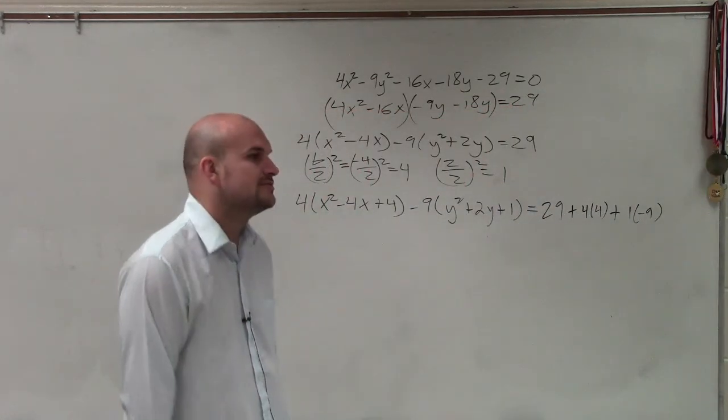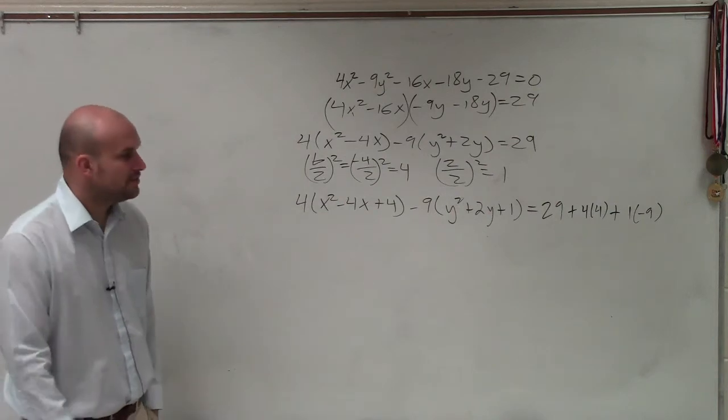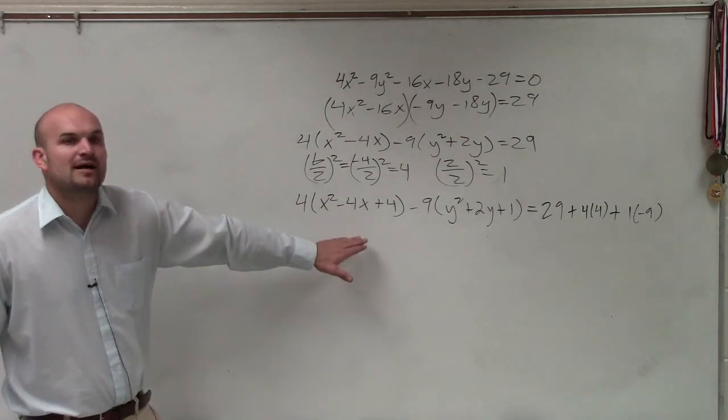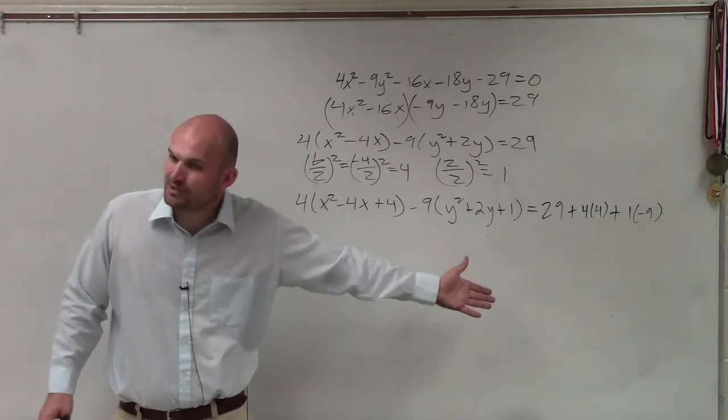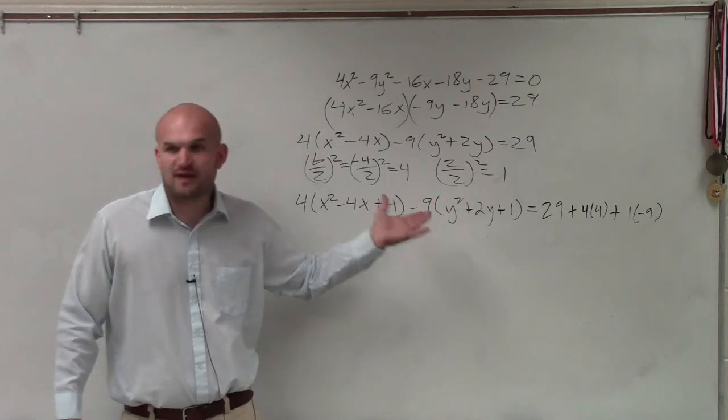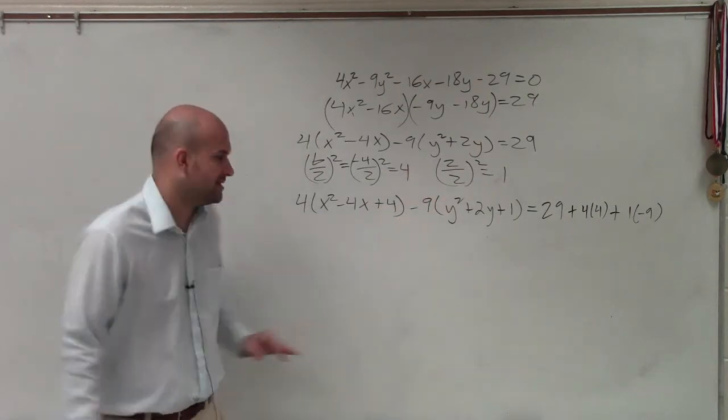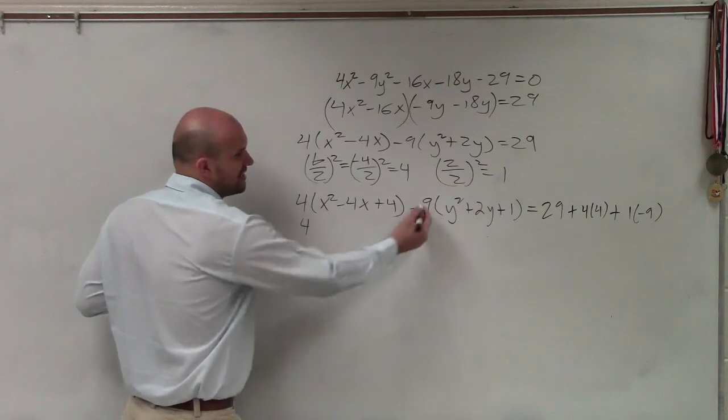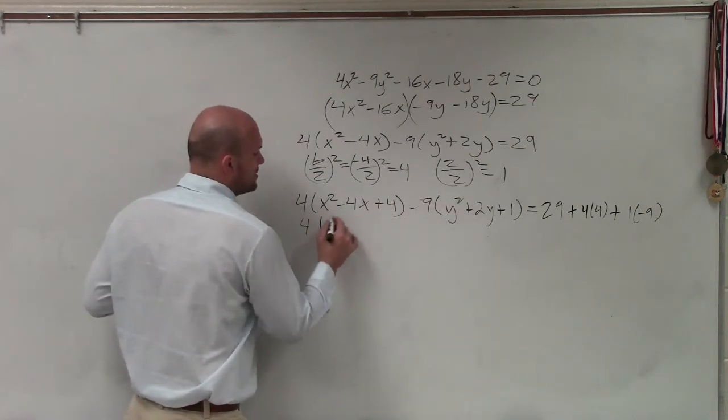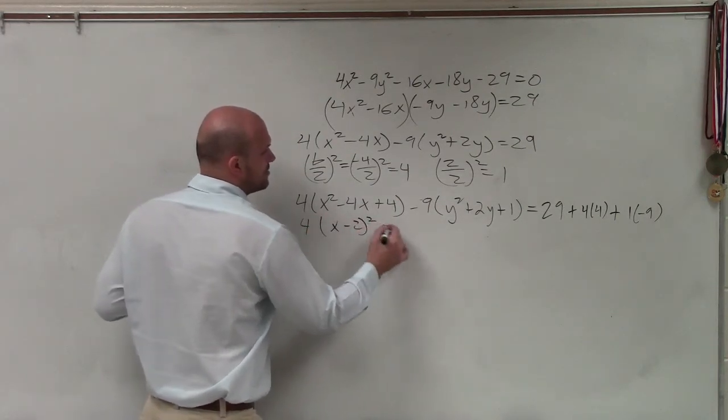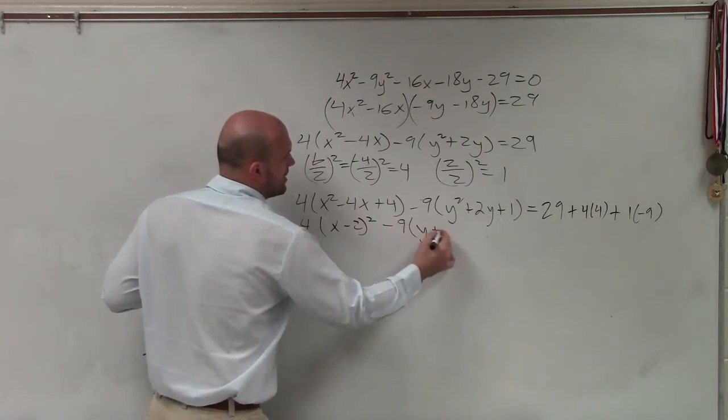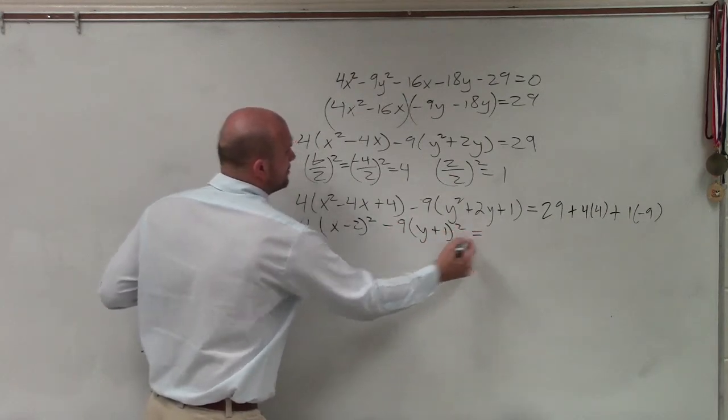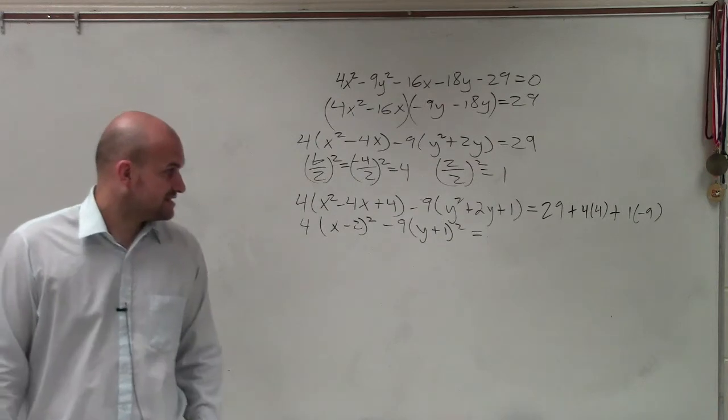All right? So now, what I'll be able to do is I can rewrite my binomial squares as perfect square trinomials. If you guys remember, it's just b divided by 2, x plus or minus b divided by 2. But hopefully, you guys recognize these two perfect square trinomials, as x minus 2 squared minus 9 times y plus 1 squared equals 4 times 4 is 16.